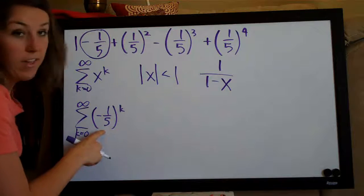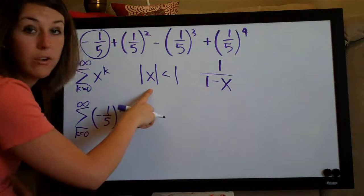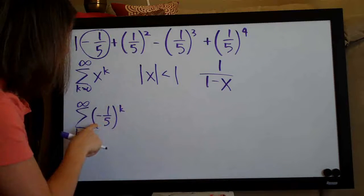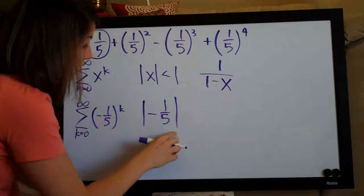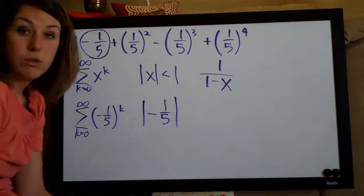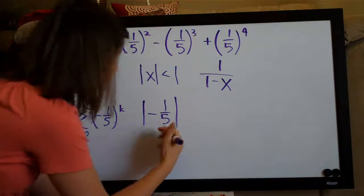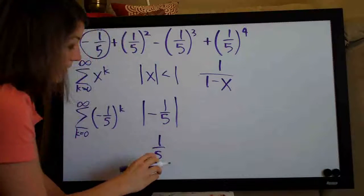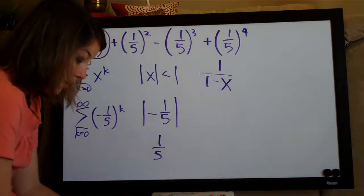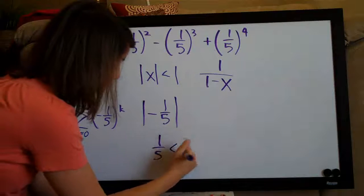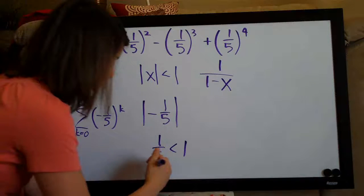Now that we've determined x is negative one-fifth, we need to figure out whether the series converges or diverges by checking the absolute value of x. The absolute value of negative one-fifth is one-fifth, which equals 0.2. Since one-fifth is less than 1, our series does converge.